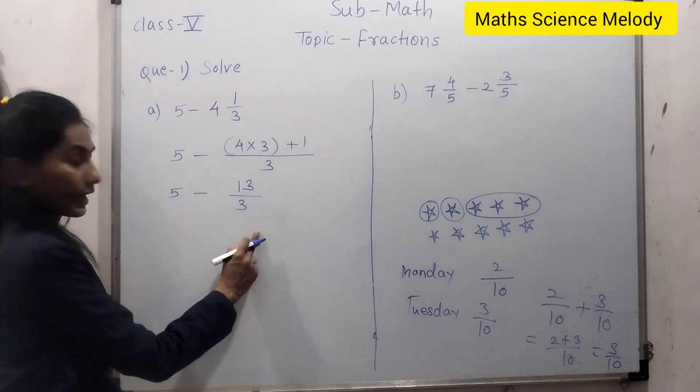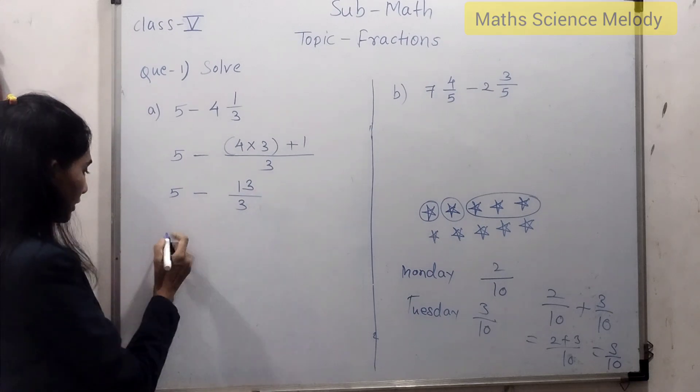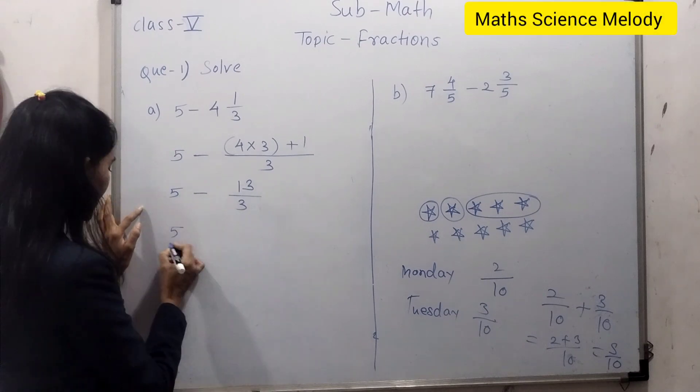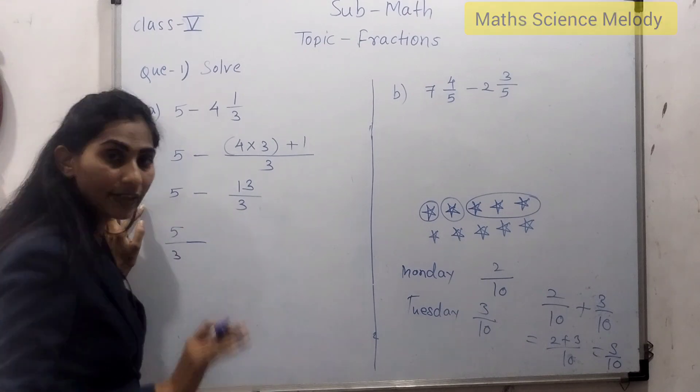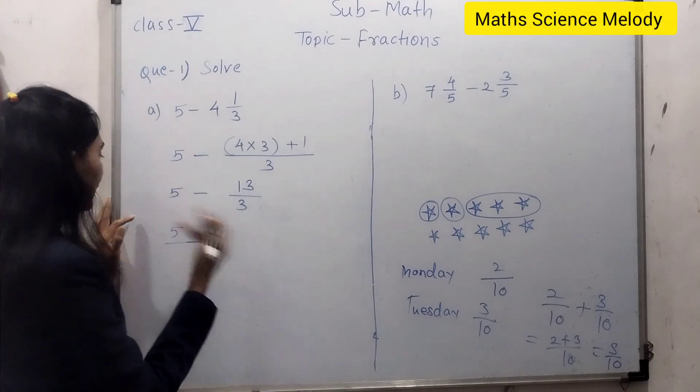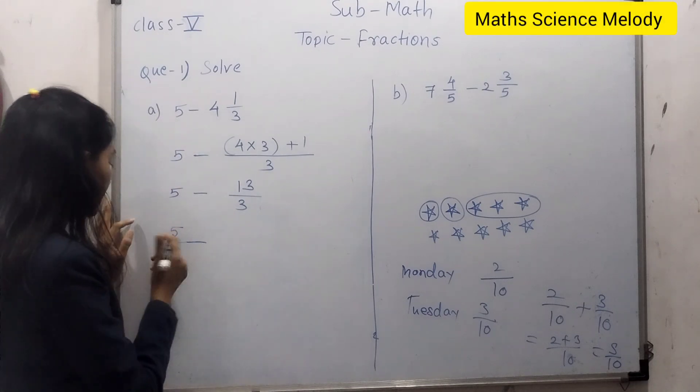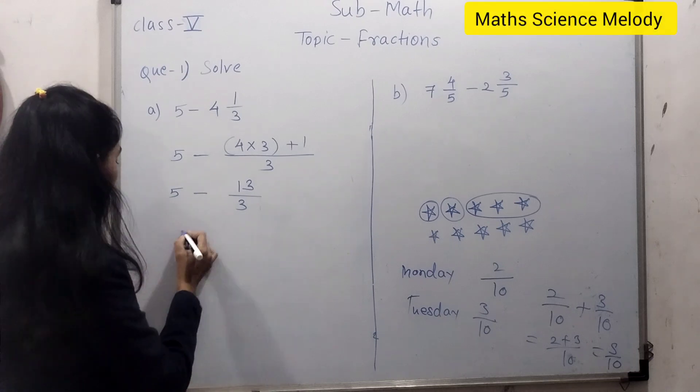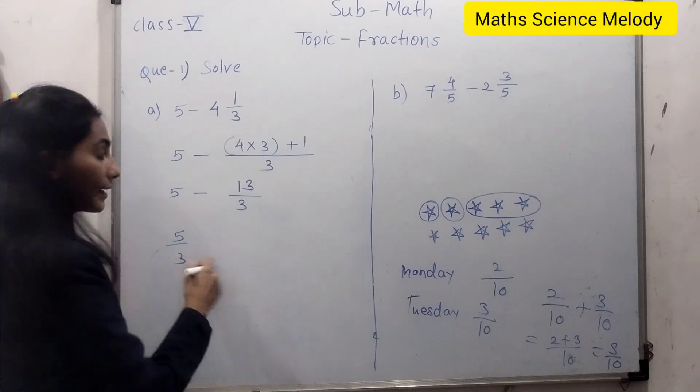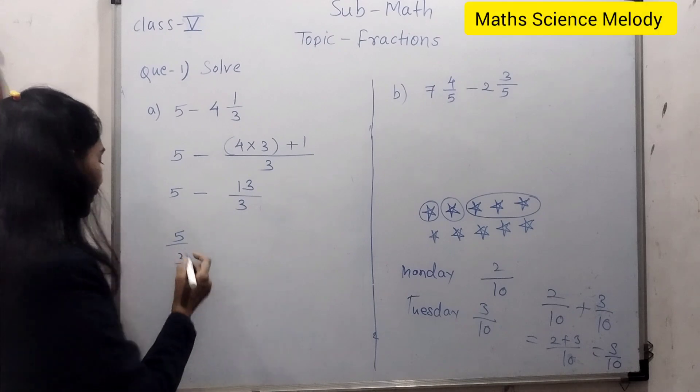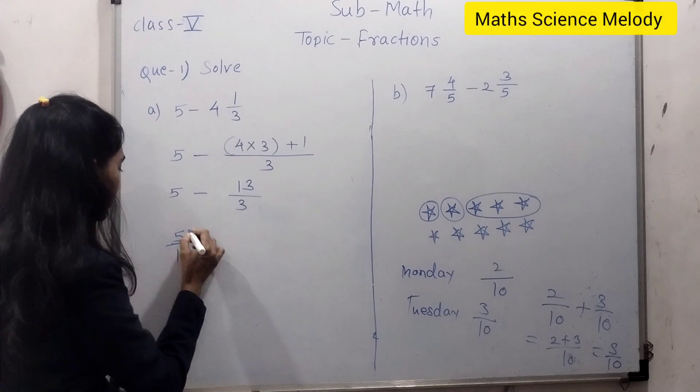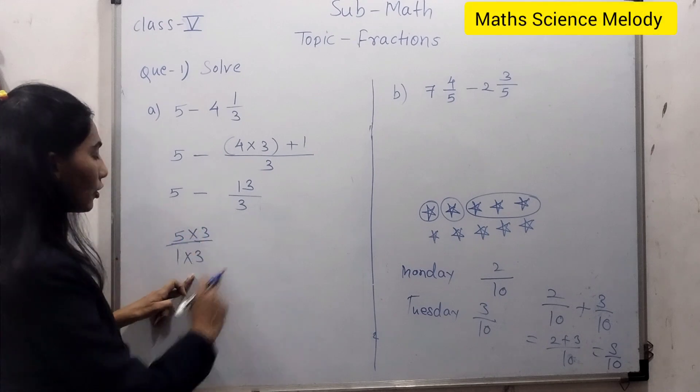So here, 5 multiply by 3 upon 3. To convert this into like fractions, you need to write 3 as a denominator, but directly we cannot write. There is some method; we cannot write 3 directly over here because it will be unbalanced. You need to consider 1 as a denominator and do multiplication with the numerator and denominator. Both numbers you have to multiply by 3.